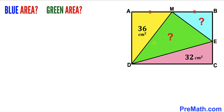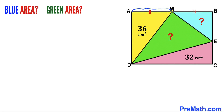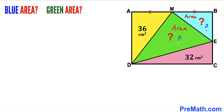Welcome to PreMath. In this video we have got four triangles fully confined in a rectangle ABCD, such that the area of the yellow triangle is 36 centimeters square, the area of the pink triangle is 32 centimeters square, and segment AM equals segment MB — in other words M is the midpoint. Our task is to calculate the area of the blue triangle and the green triangle as well.